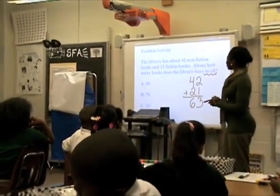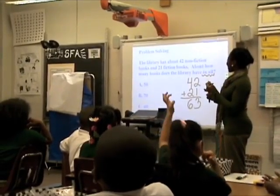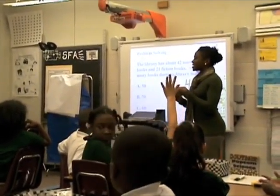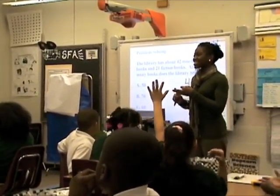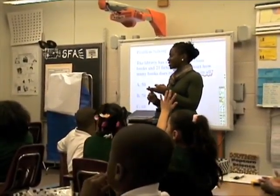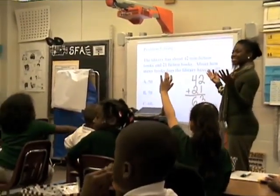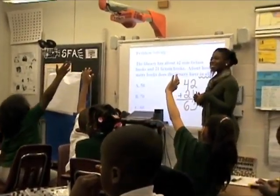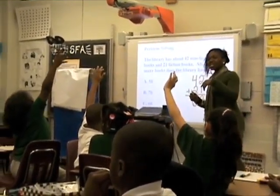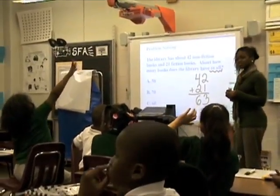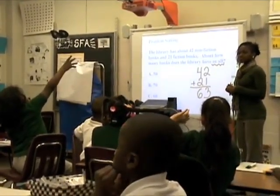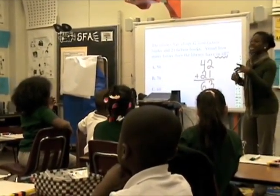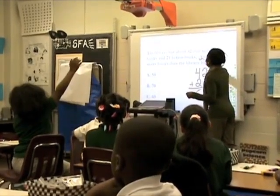But I look at my answer choices, and it says A: 50, B: 70, C: 60. What did I miss about this problem? What did I miss, Kali? You missed the keyword 'about.' The keyword is 'about.'